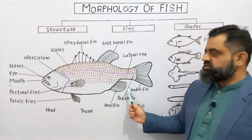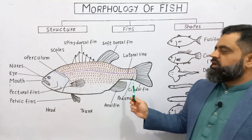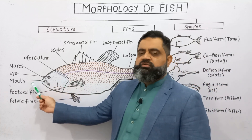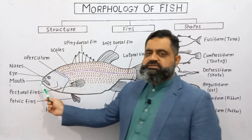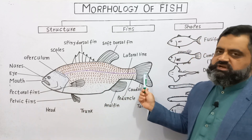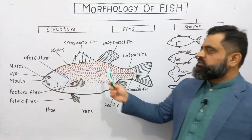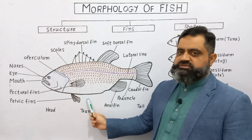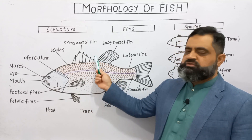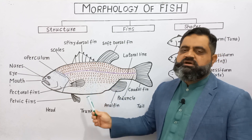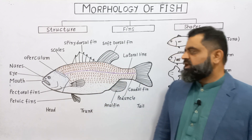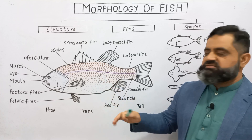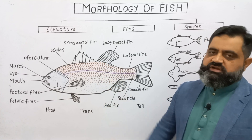This is a diagram of a general fish. There is an anterior side on which there is a mouth present, and there is a posterior side where the tail is located. This is the dorsal side of the fish and this is the ventral side. The dorsal side is usually on the back and the ventral side is the belly side. There are also two other sides known as the lateral sides, which are the right and left sides of the fish.